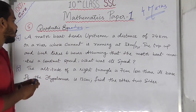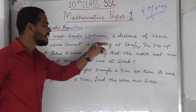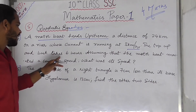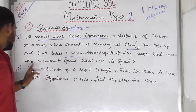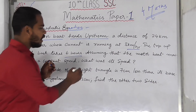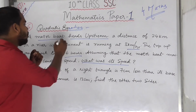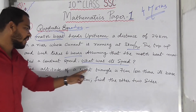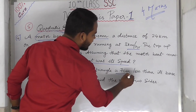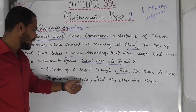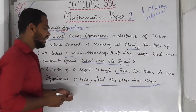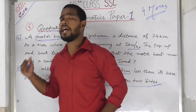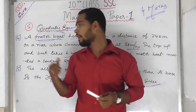Two more important questions from quadratic equations: a motorboat travels a distance of 24 km upstream on a river whose current runs at 3 km per hour; the trip up and back takes 6 hours — find the speed of the motorboat. Also: the altitude of a right-angle triangle is 7 cm less than its base; if the hypotenuse is 13 cm, find the other two sides.